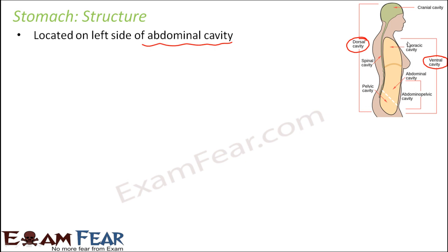In the ventral side we have three cavities. First is the cranial cavity — that is the skull or head portion. Next is the thoracic cavity, where the thorax is located. The next one is the abdominal cavity, which contains organs like the stomach, liver, and small intestine. The lower portion from the back side is the pelvic cavity, and from the front side is the abdominopelvic cavity, related to both abdominal and pelvic regions.